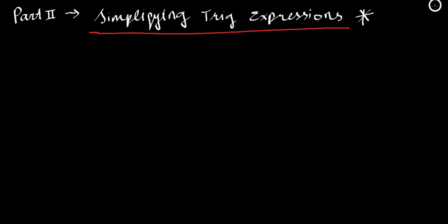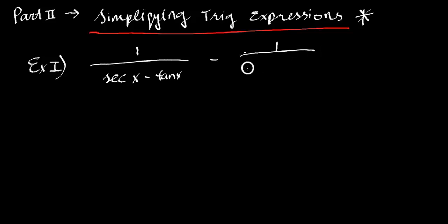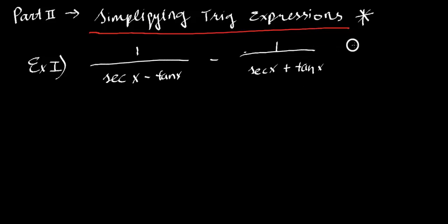I'll start on my three examples. Our first example is 1 over (secant x minus tangent x) minus 1 over (secant x plus tangent x). This may look intimidating for some people, but it's not. This is just one thing, and the only thing it is, is a fraction problem.